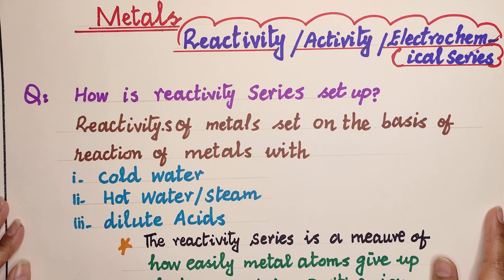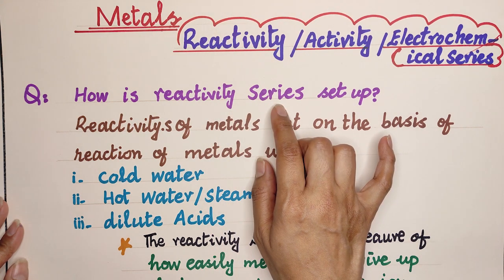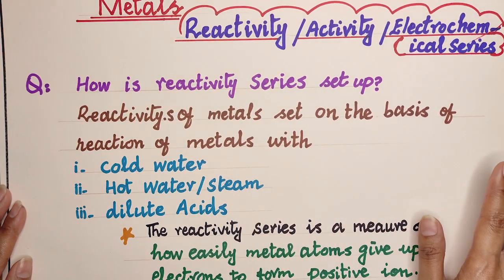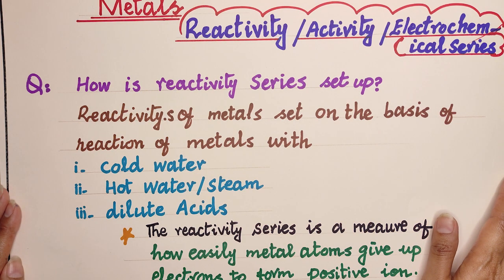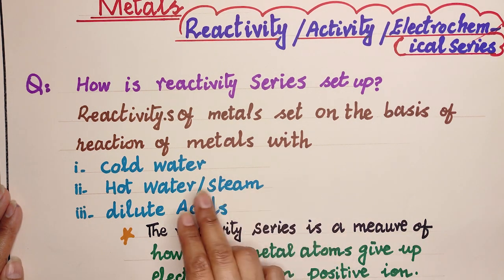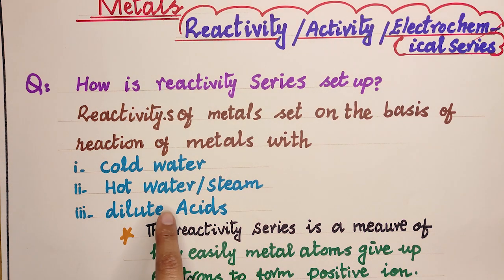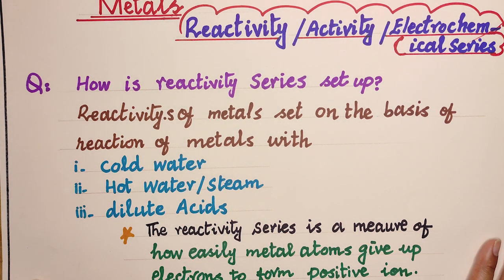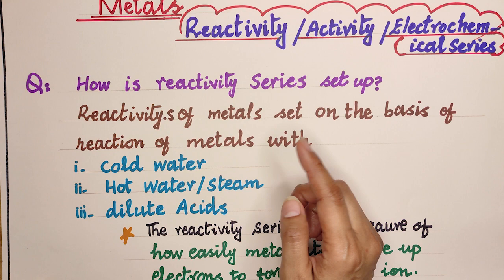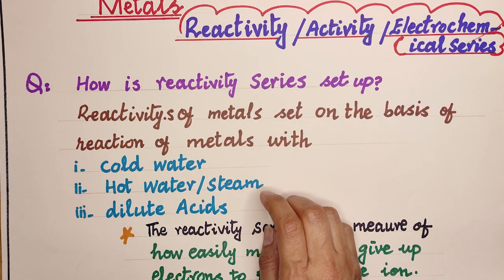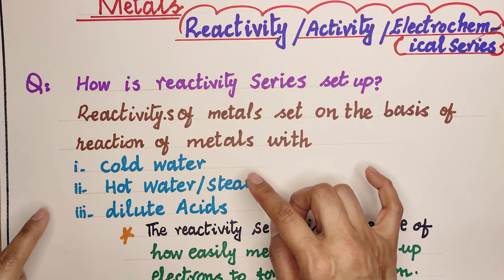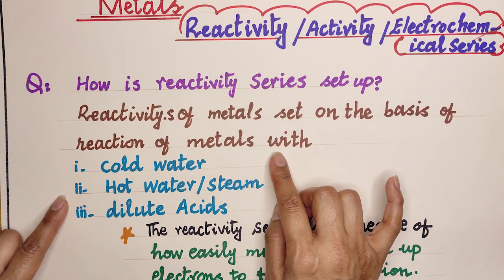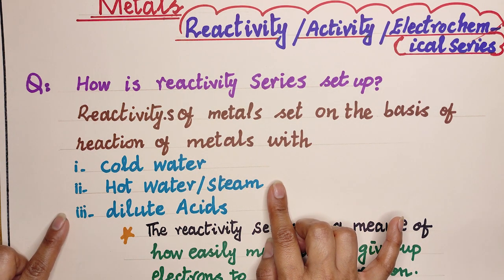How is the reactivity series set up? The reactivity series of metals is set up on the basis of reactions of metals with cold water, hot water (steam), and dilute acids. After these reactions, we determine which metal is more reactive and which metal is least reactive.